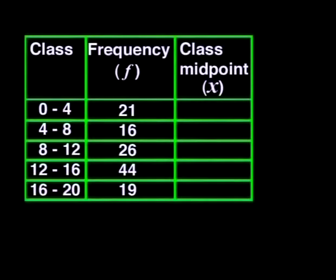Now this midpoint gives us an estimate of the mean. Why is it only an estimate? Well, to be more accurate, we could have used all the numbers in your data to find the mean, but that's not necessary. The midpoint of each class is the fairest number that represents all the numbers in the class, and the mean of the midpoints is accurate enough.